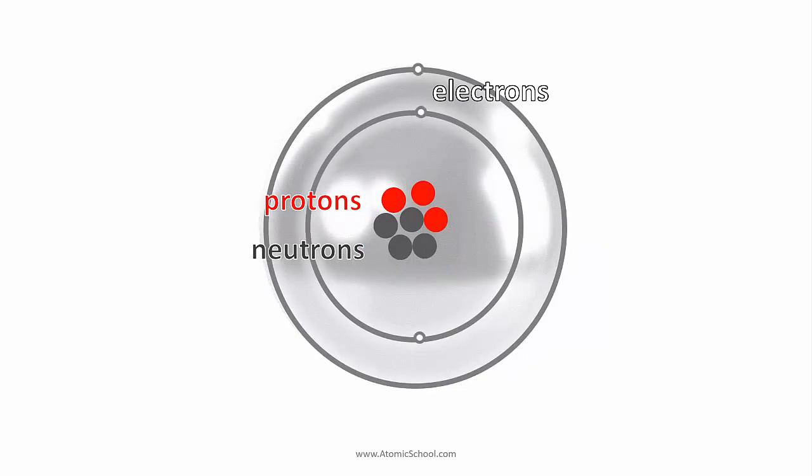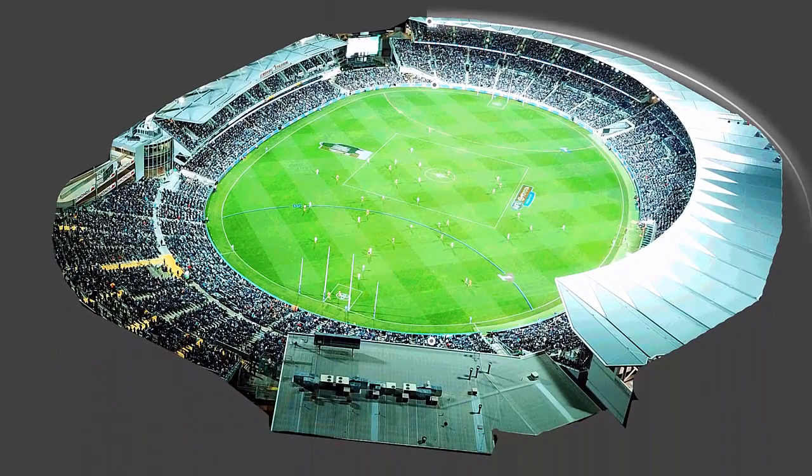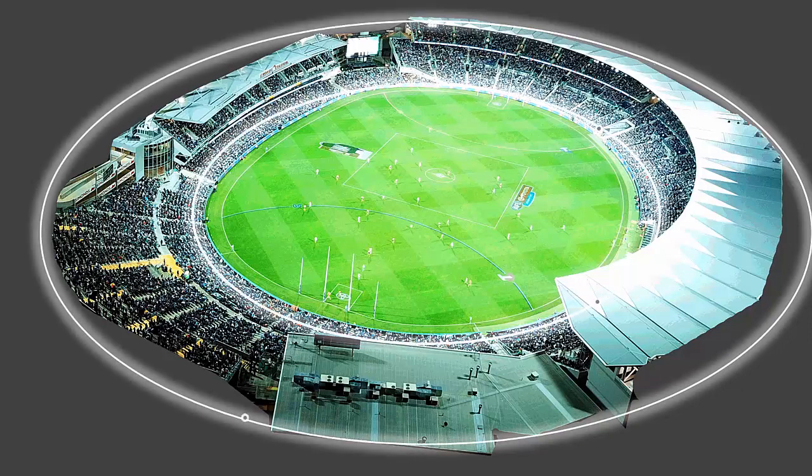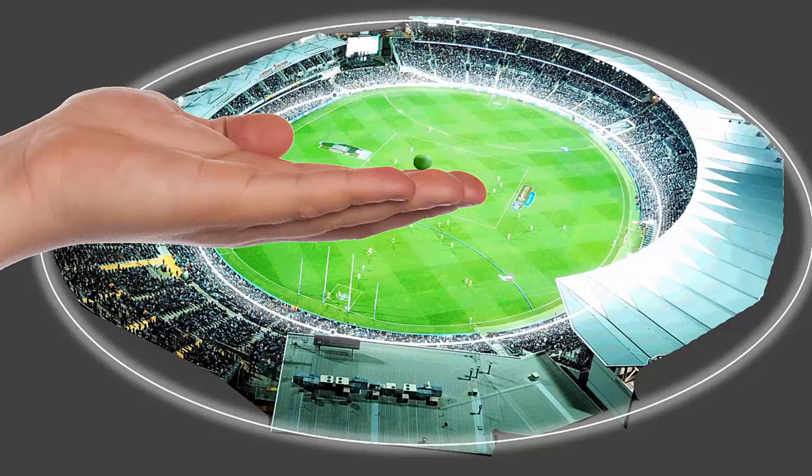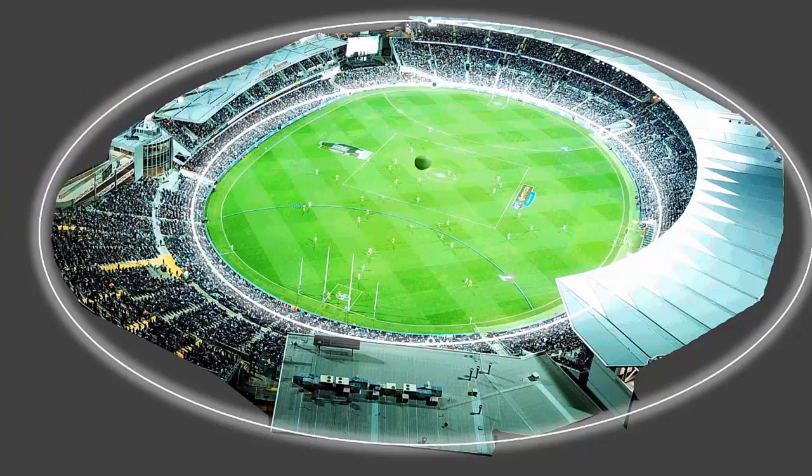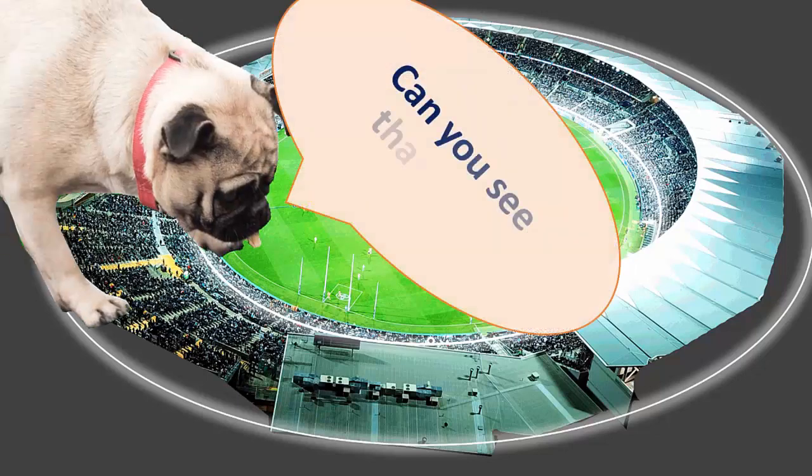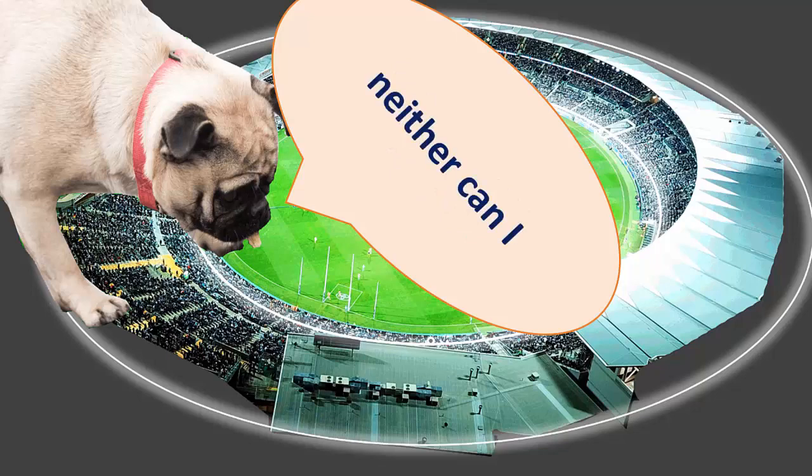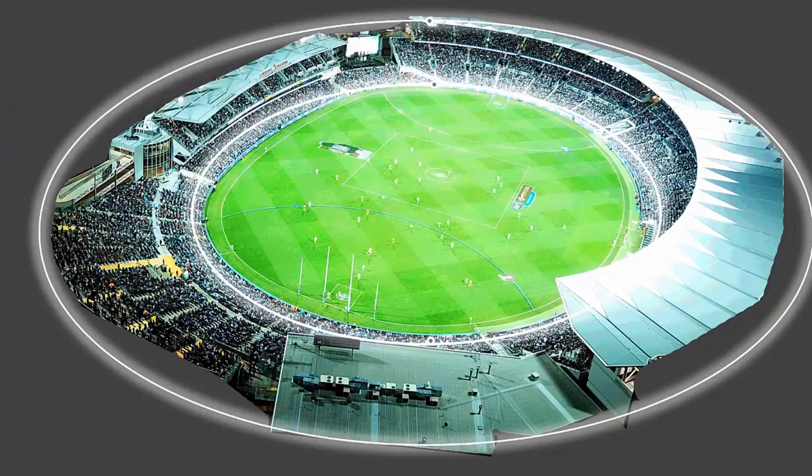The nucleus is much smaller than shown here in the diagram. If an atom were the size of a football stadium, the nucleus would be the size of a pea. This means that most of an atom's size comes from its orbiting electrons, and that an atom is mostly empty space.